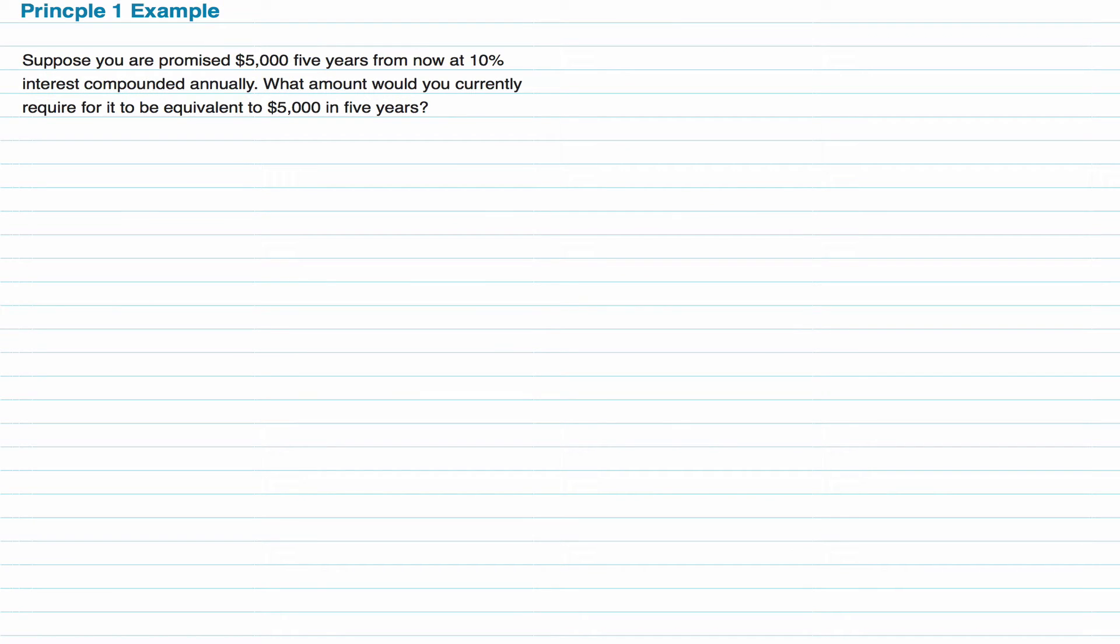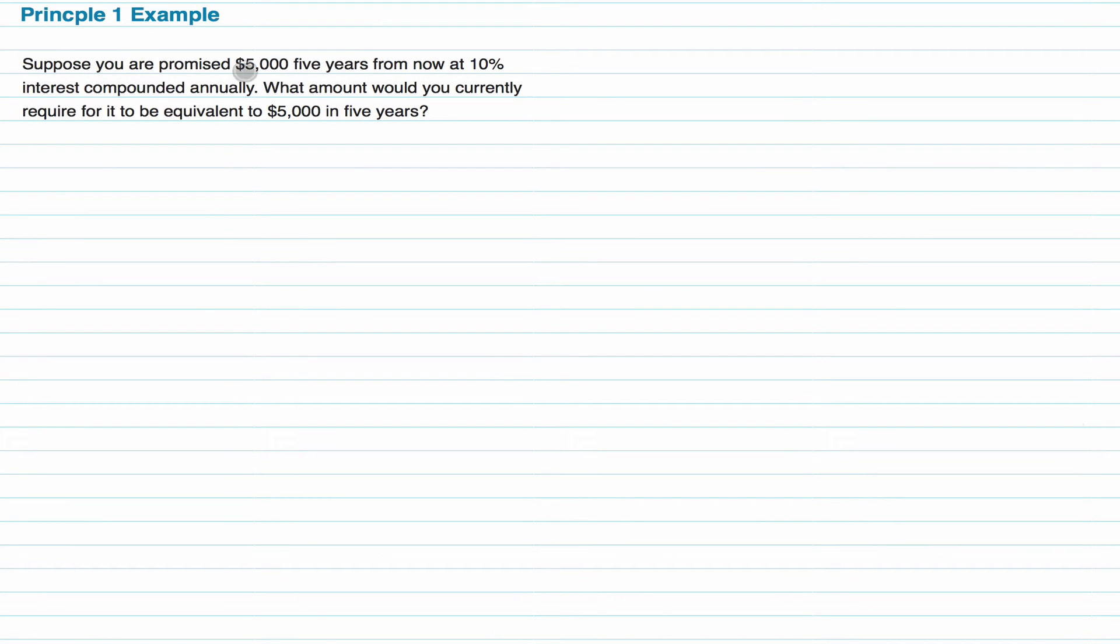Let's just do another example of time basis, common time basis. Suppose you are promised $5,000 five years from now at 10% interest compounded annually. What amount would you currently require for it to be equivalent to $5,000 in five years? So what present value do you need now for that present value to be equivalent to $5,000 five years from now?